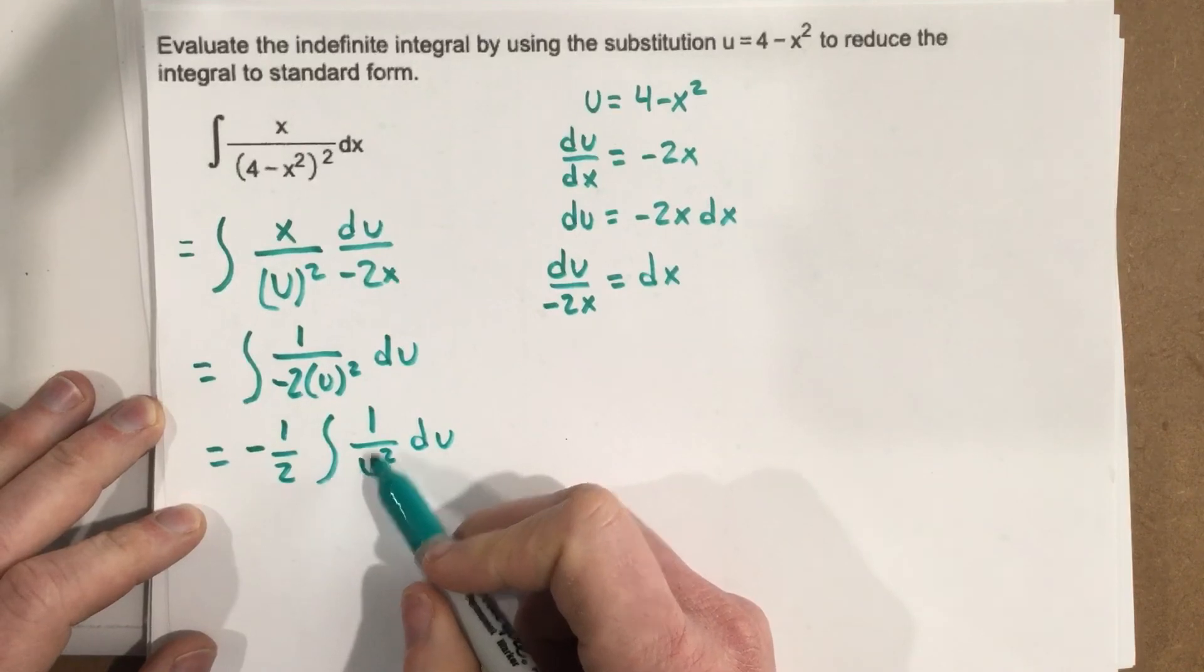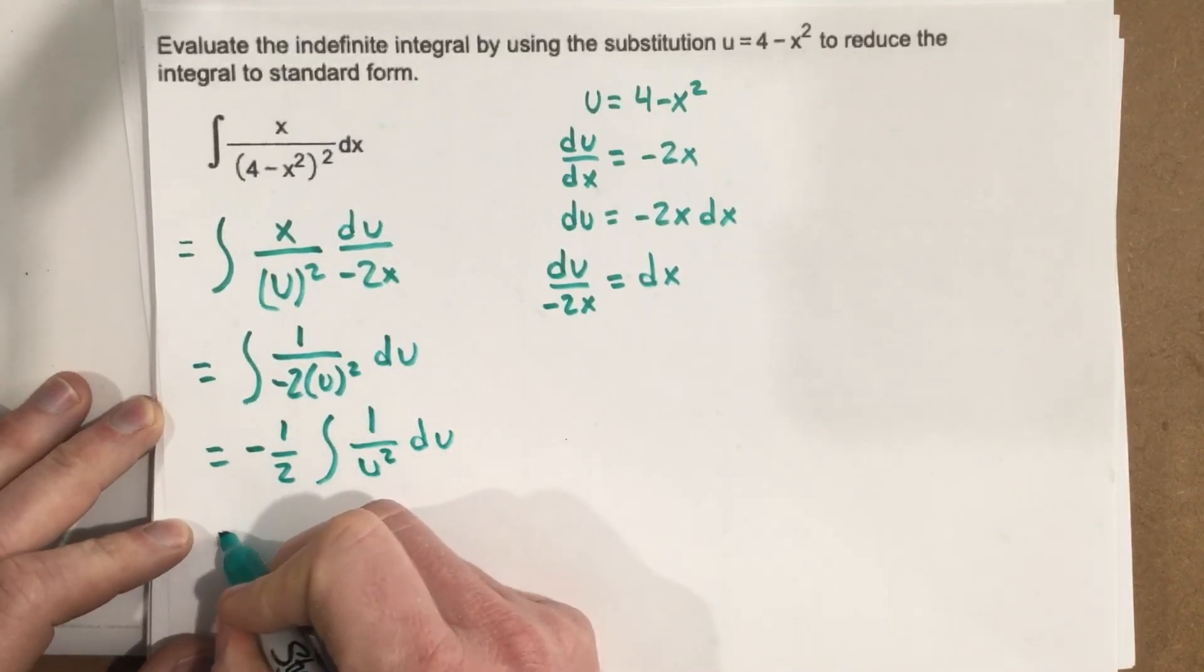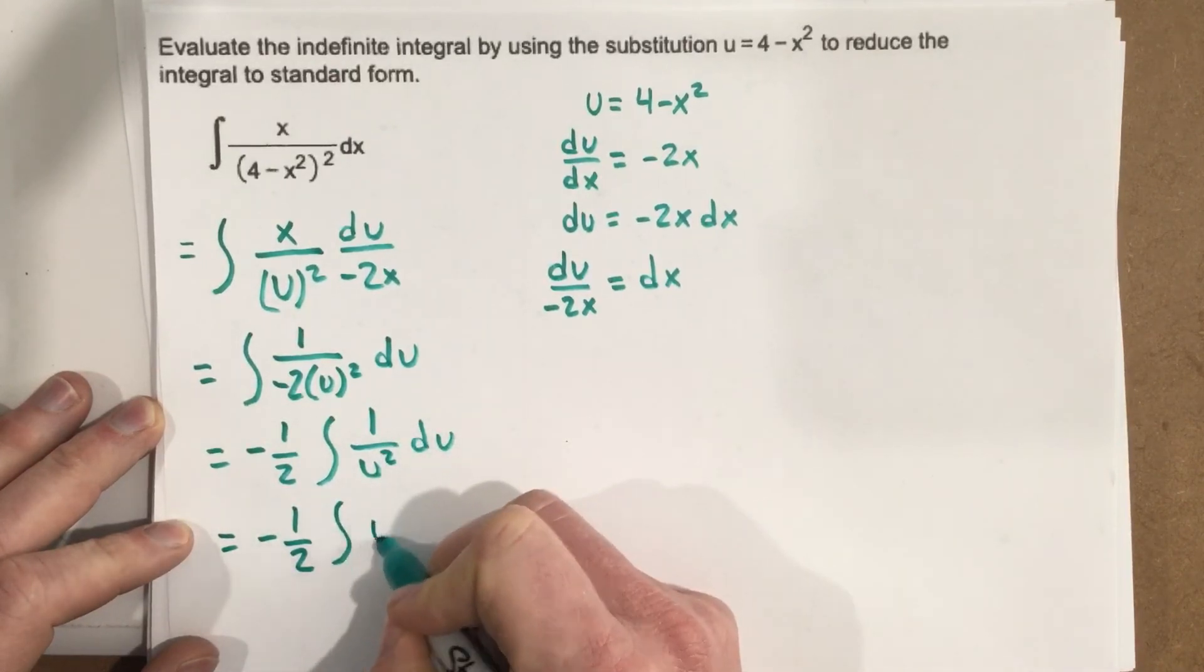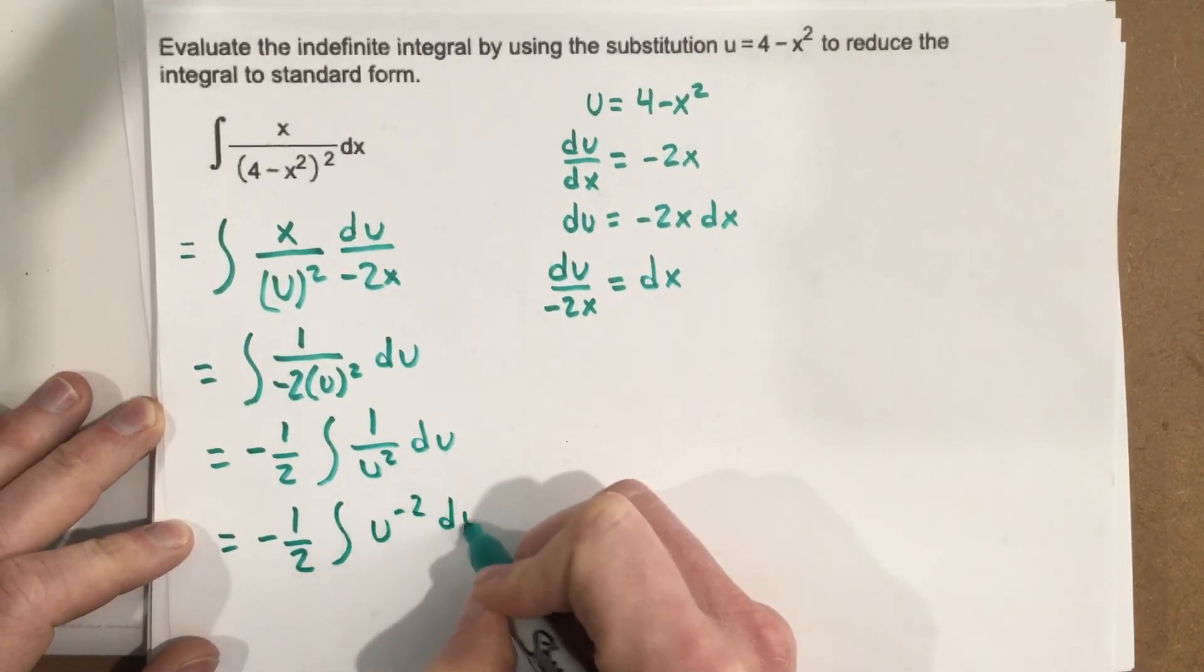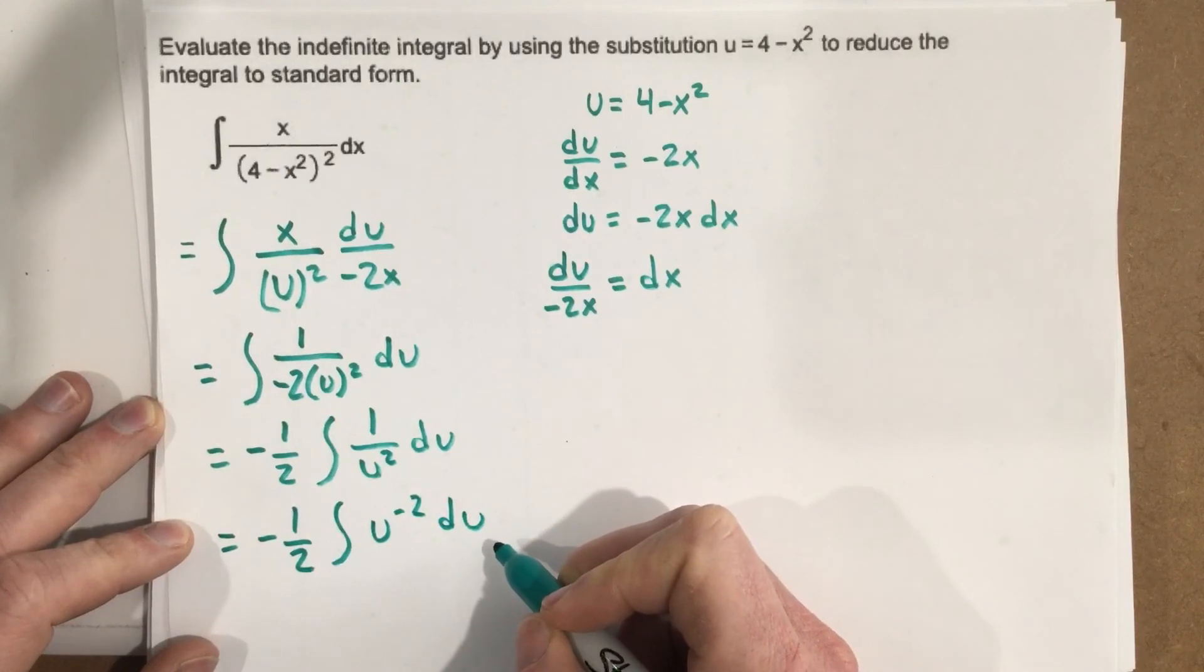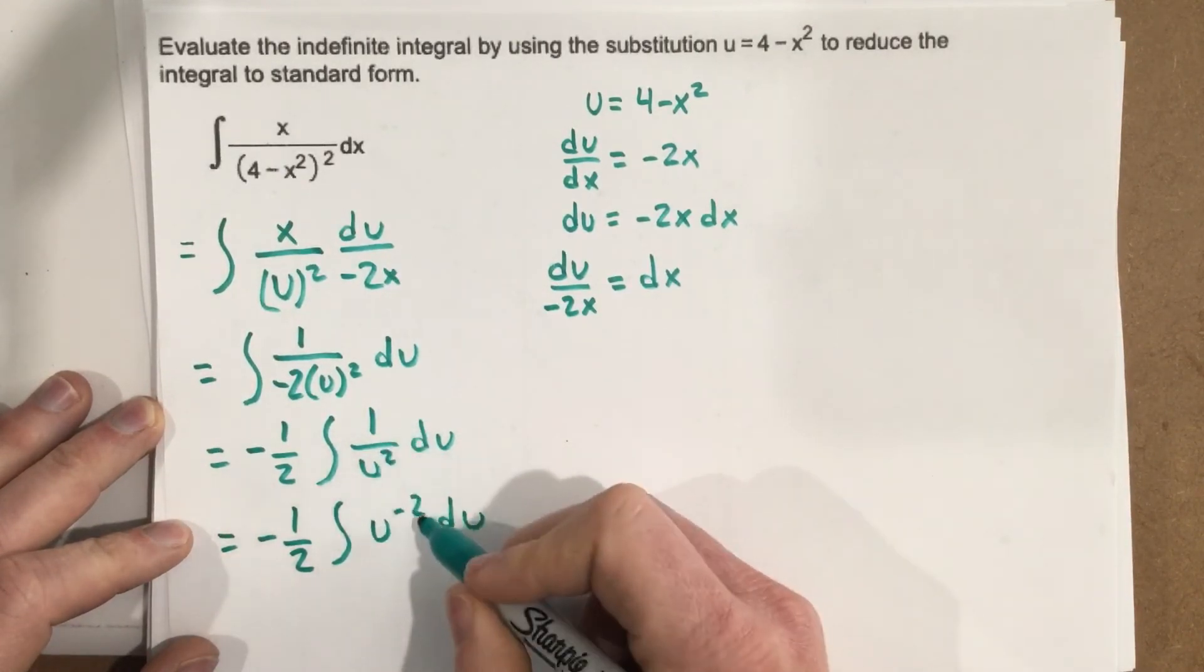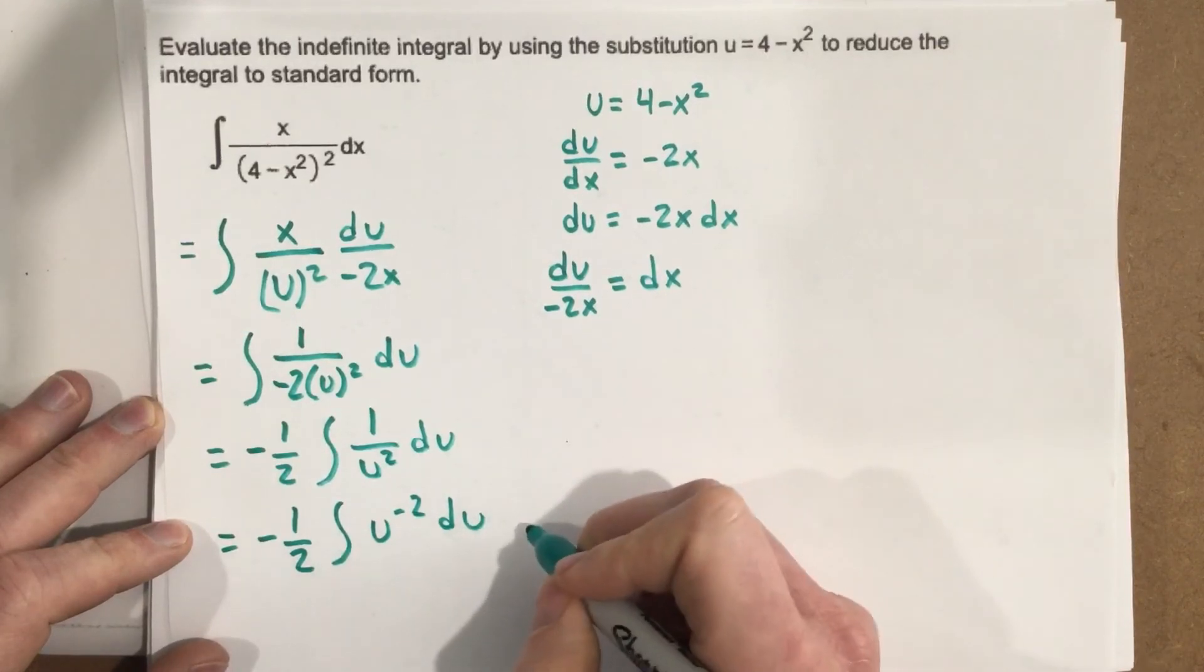So we can go ahead and evaluate this. That's going to equal negative 1 half integral. This would be u to the negative 2 du. When we rewrite this and move this to the top, the exponent now is negative. So then we can actually do the integration.